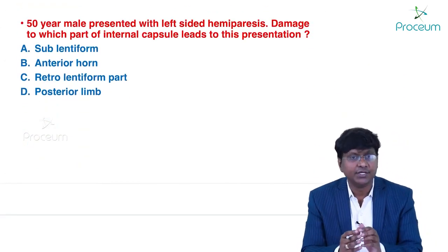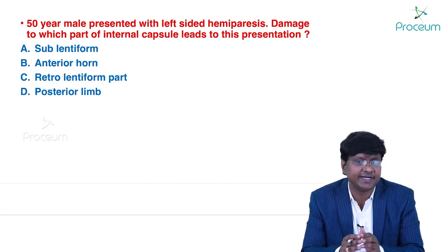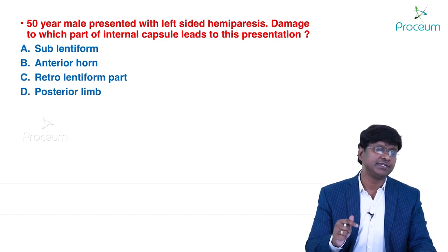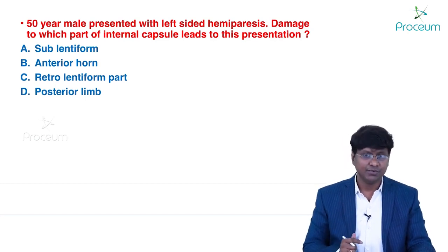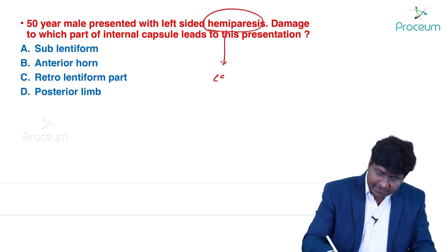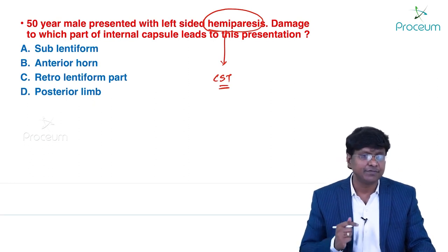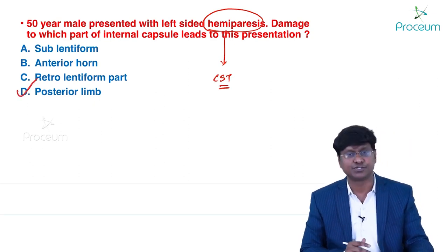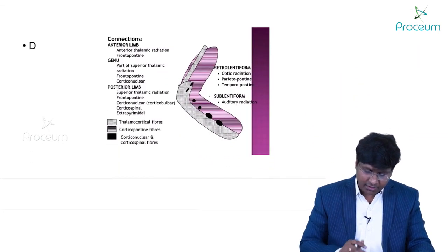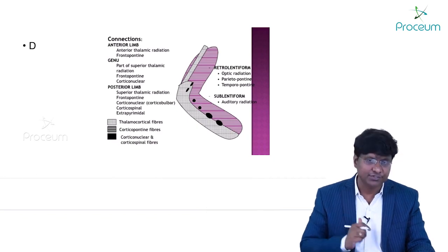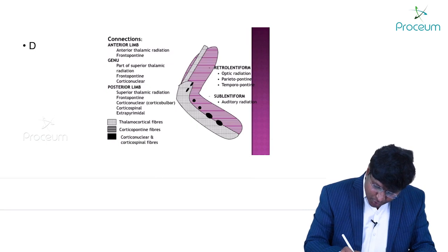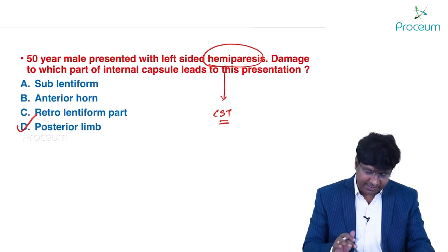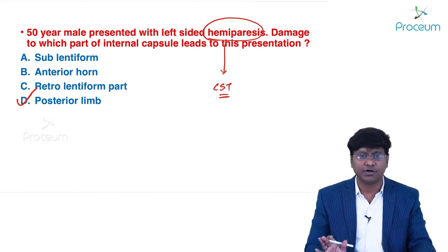A 50-year-old male with left-sided pure motor hemiparesis: damage to which part of the internal capsule causes this? Options are sublentiform nucleus, anterior limb, retrolentiform part, posterior limb. For pure motor hemiparesis, the corticospinal tract must be damaged. The corticospinal tract is densely concentrated in the posterior limb of the internal capsule. The internal capsule has anterior limb, genu, and posterior limb — with the corticospinal tract in the anterior part of the posterior limb. The answer is the posterior limb.